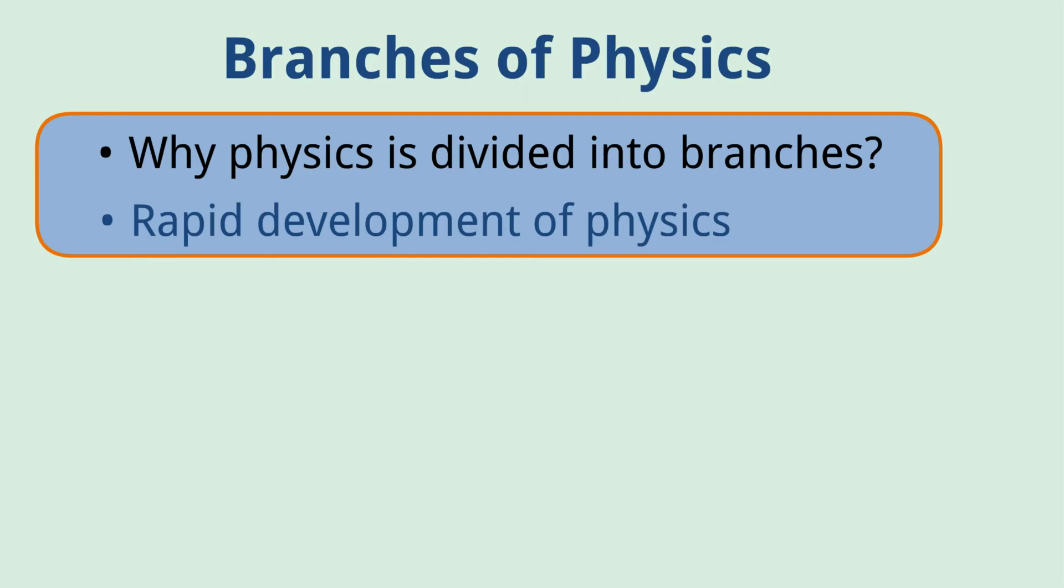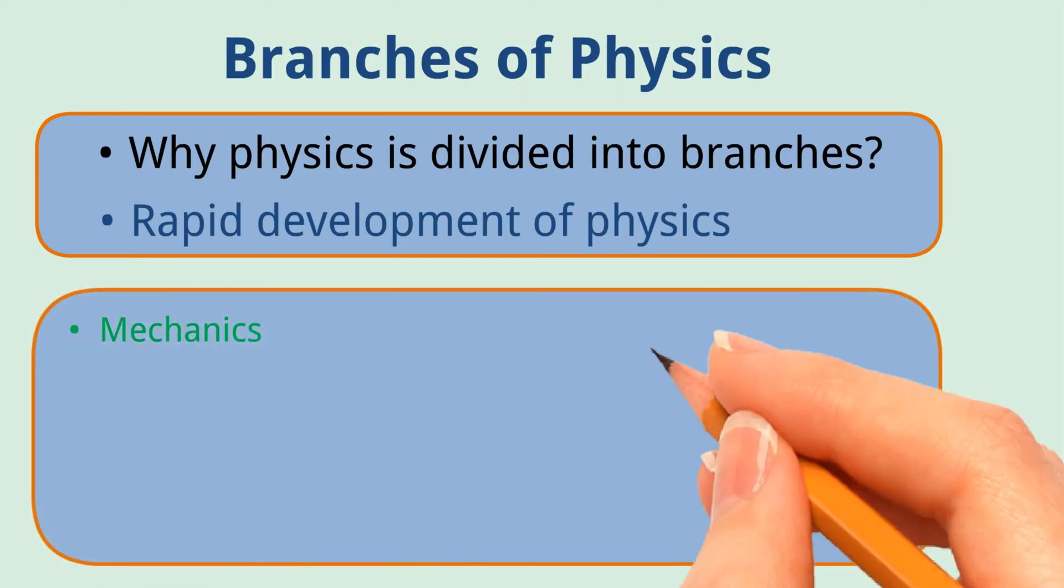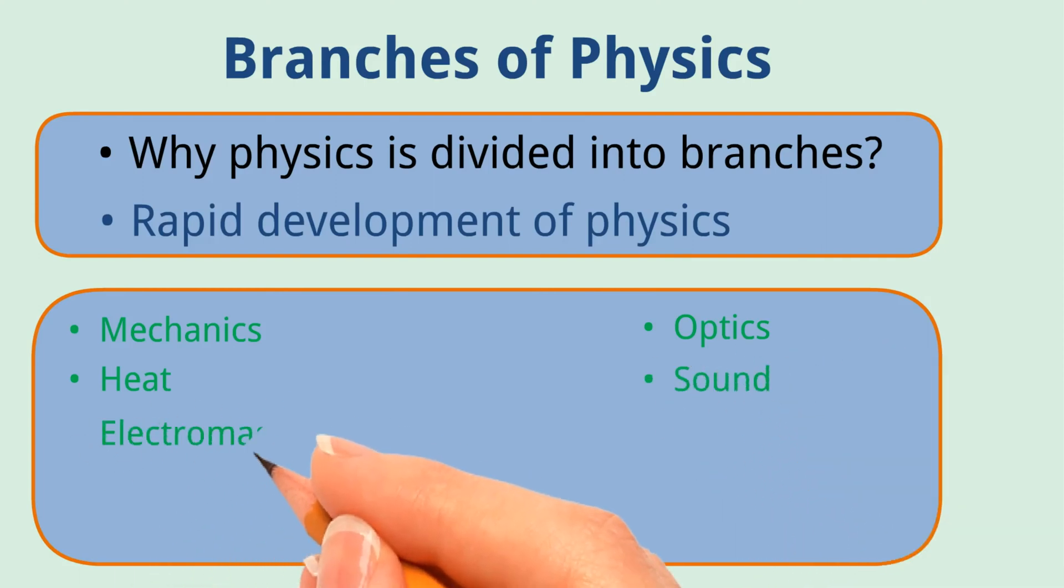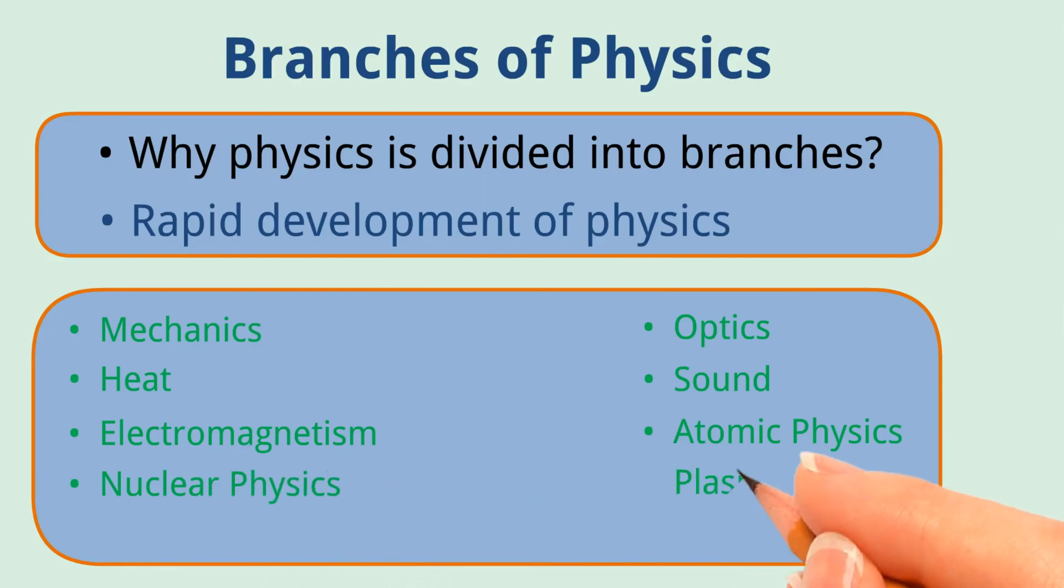Physicists divided physics into following branches: Mechanics, Optics, Heat, Sound, Electromagnetism, Atomic physics, Nuclear physics, Plasma physics, and Geophysics.